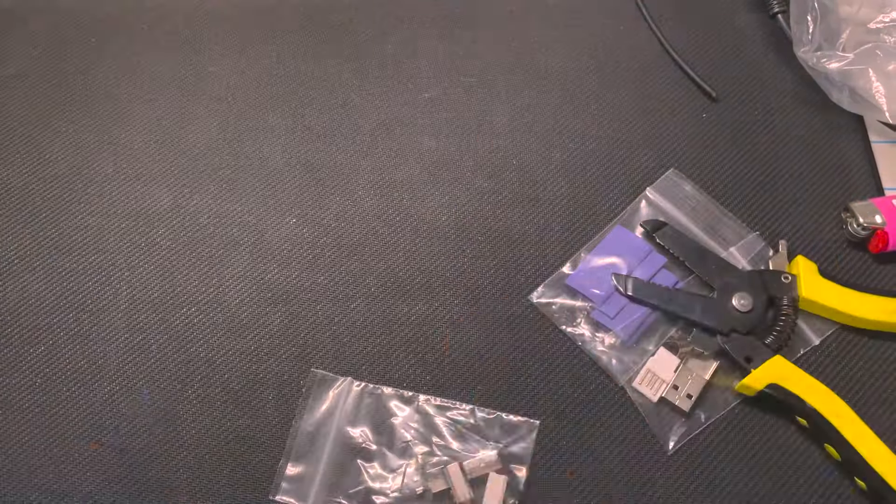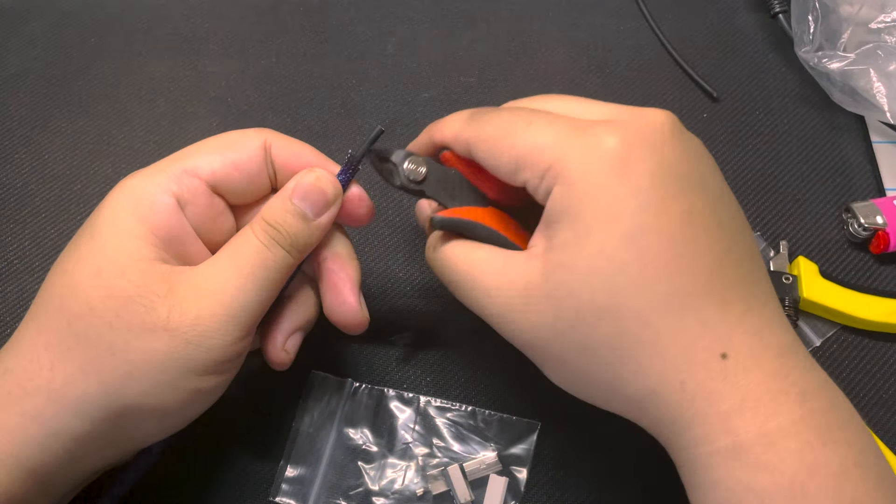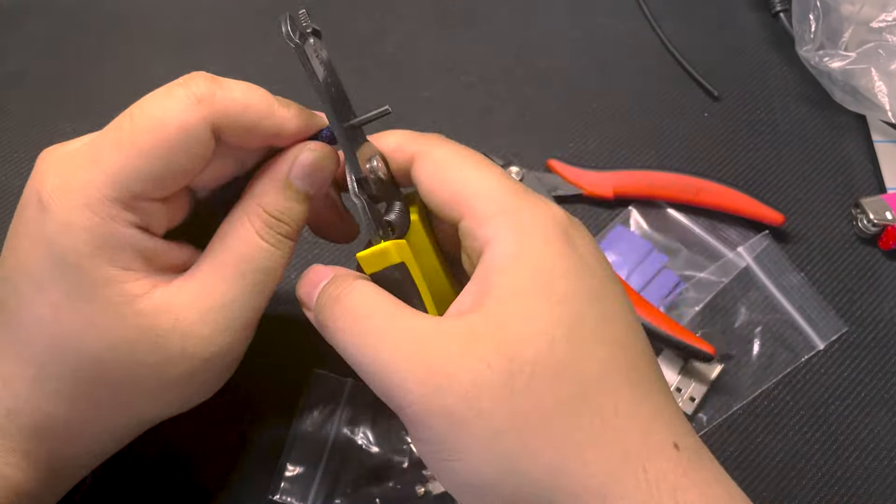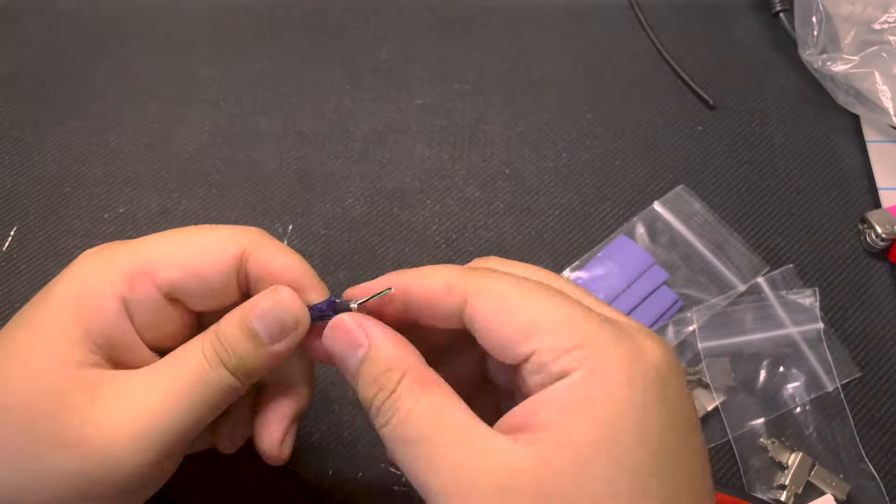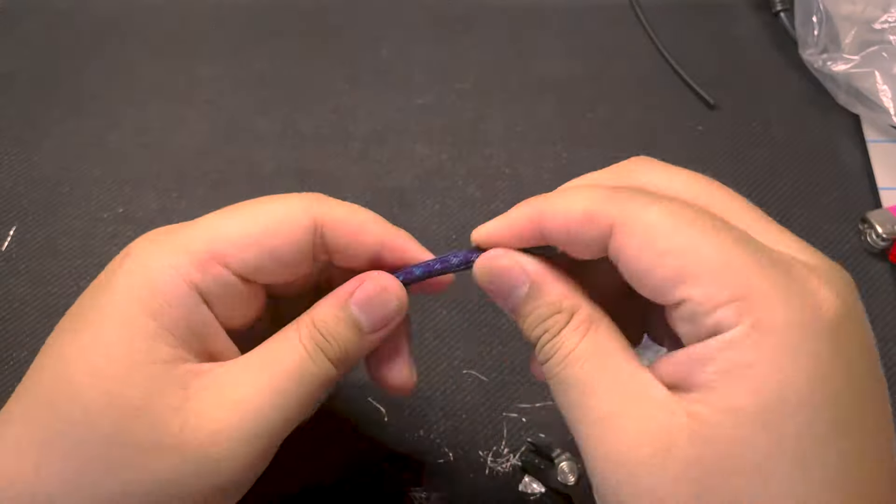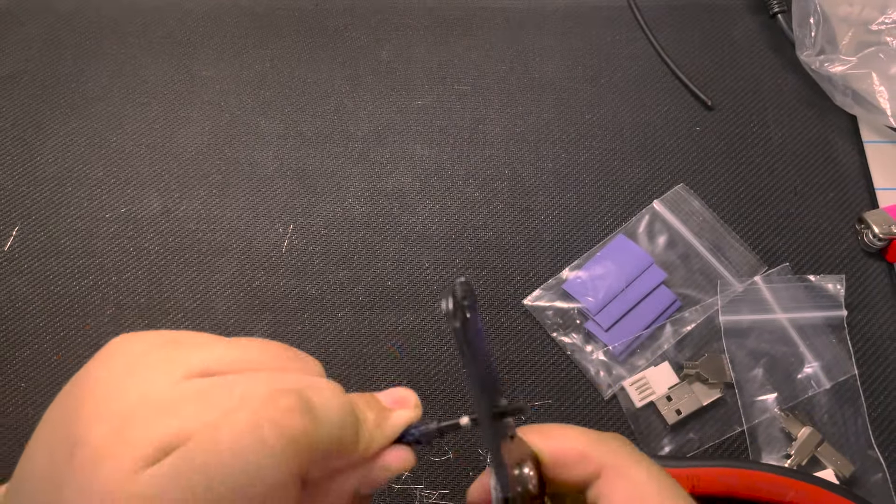Next off I'm gonna go ahead and remove the outer sleeving, just a little bit of it to prepare our cable to be stripped, and I'm going to use our pliers to gently yet aggressively remove the outer jacket as well as removing the shielding for the wires to be exposed.